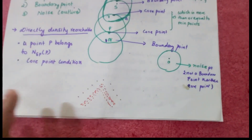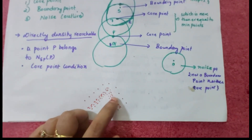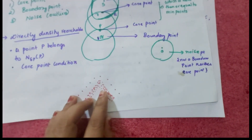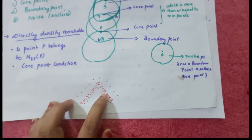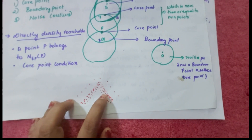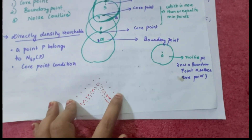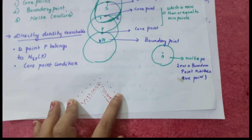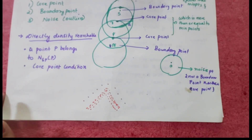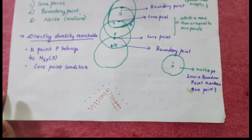Looking at a cluster visualization, this is a cluster of arbitrary shape. A cluster consists of both boundary points and core points. The scattered isolated points are called noise points. DBSCAN can identify these outliers or noise points effectively.